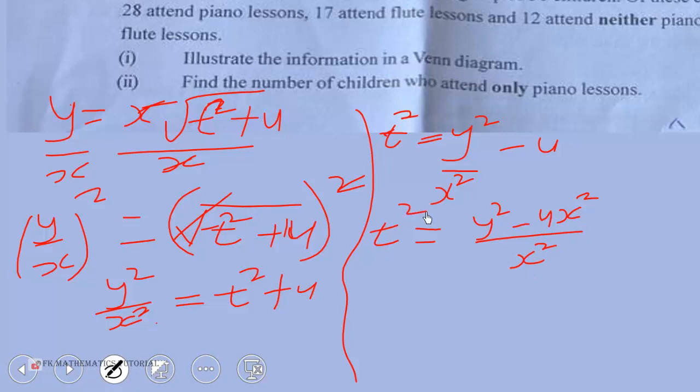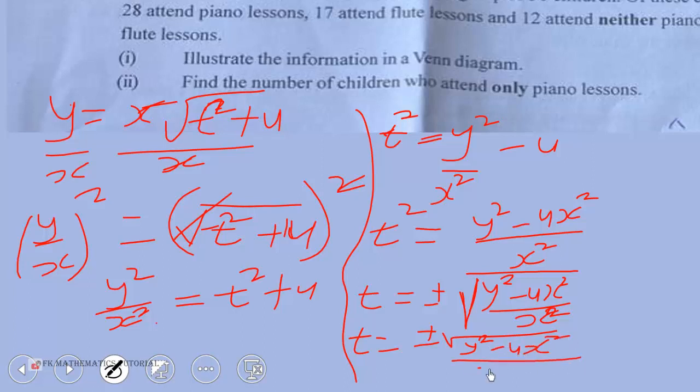You can take square root of both sides to get t equal plus or minus square root of y squared minus u x squared over x squared. You can split the square root to get t equal plus or minus square root of y squared minus u x squared all over x.